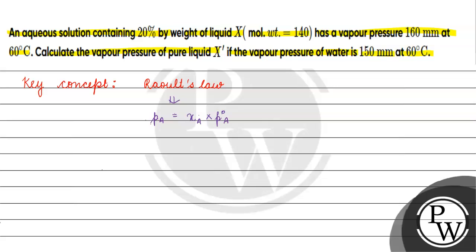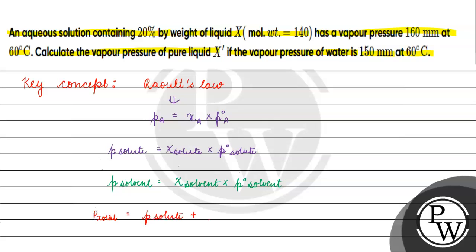So we can write: vapor pressure of the solute equals mole fraction of the solute multiplied by vapor pressure of the solute in the pure state. Vapor pressure of solvent equals mole fraction of the solvent into vapor pressure of the solvent in the pure state. And P total equals vapor pressure of the solute plus vapor pressure of the solvent.